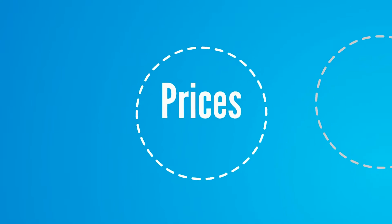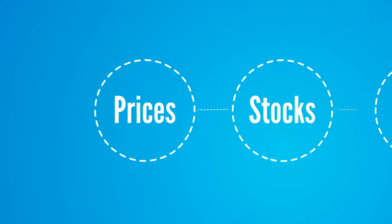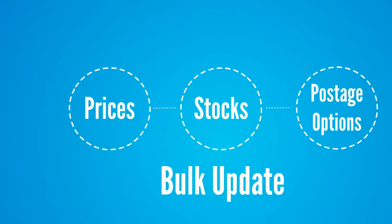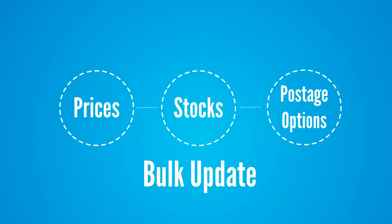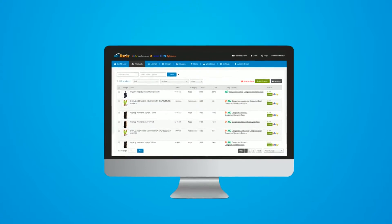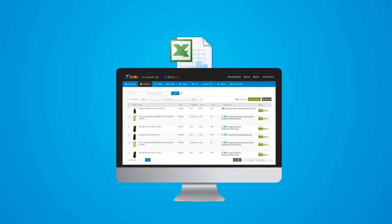Product data such as prices, stocks or postage options can easily be updated in bulk within a few clicks, either directly through AdLister's interface or by using a spreadsheet.